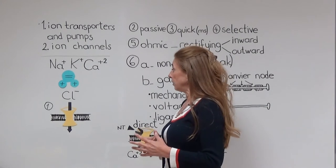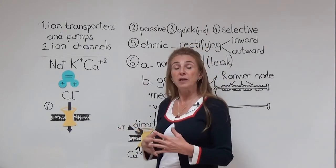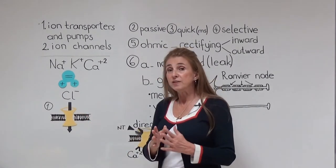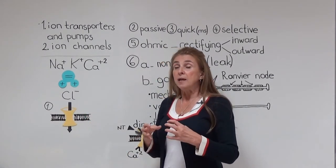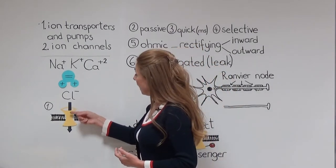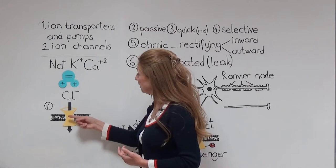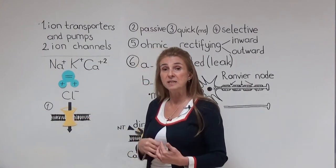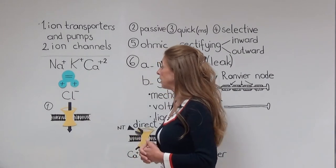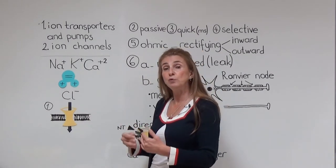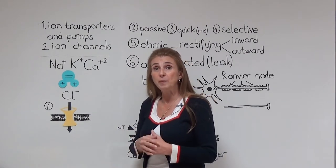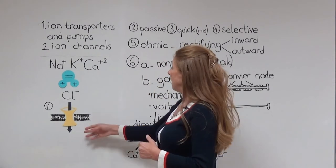The first property of ion channels is that they are proteins — specifically, integral or transmembrane proteins. This means they have a portion outside the membrane, within the membrane, and inside the membrane. They cross the membrane from one side to the other, and so they are able to let the movement of ions from one side of the membrane to the other.